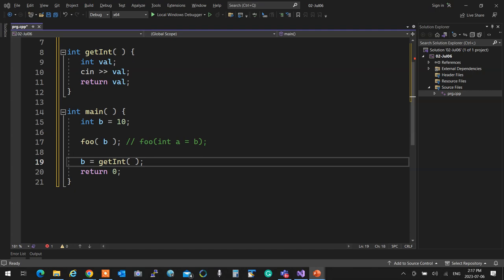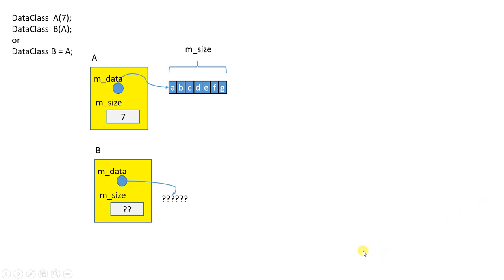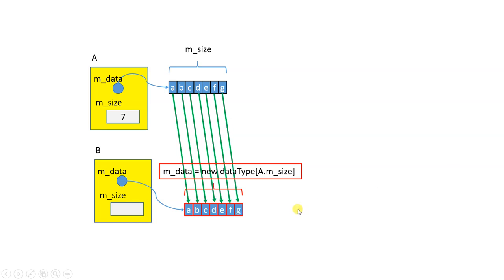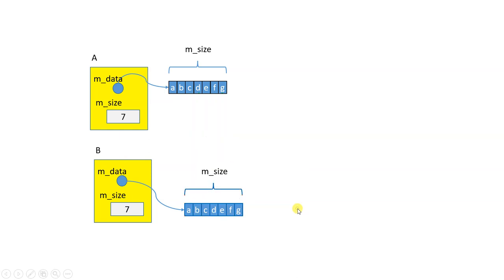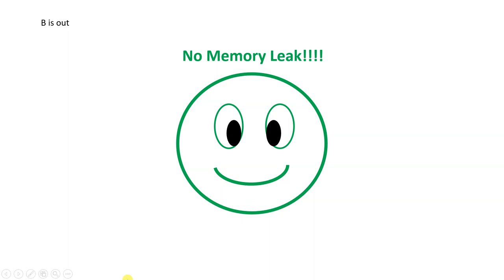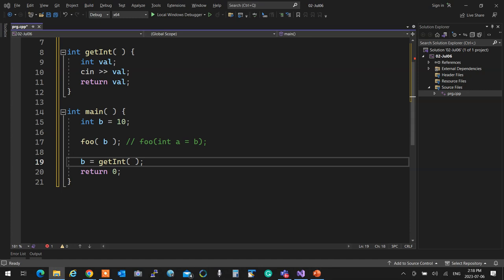How do we do good copying? When we want copying to be done correctly, the very first thing we do is measure the size of the data we want to copy and allocate memory for it. Then we copy every individual item from the source into the new memory. Then we copy the size. After that, both objects have their own separate memory — no memory leak, no crash, everything is beautiful. That's deep copying — that's the copy constructor.